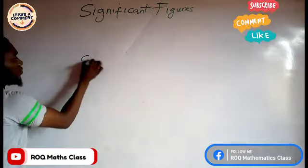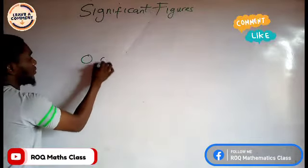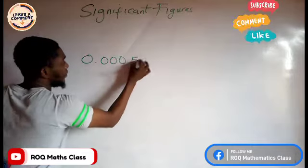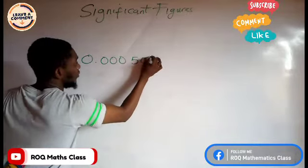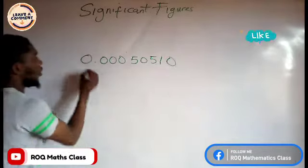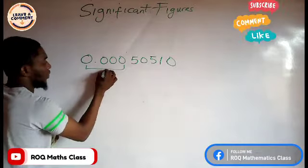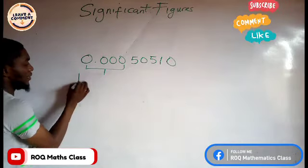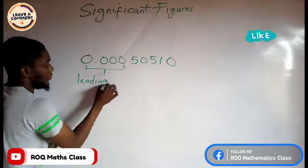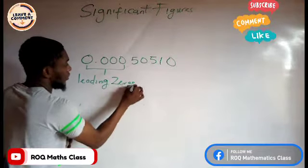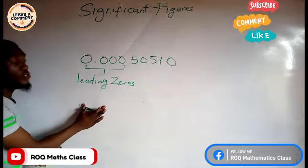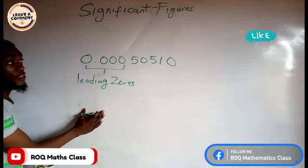If I show something like 0.0000005, all these zeros here are leading zeros. Leading zeros — we don't count them as significant figures.